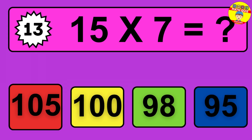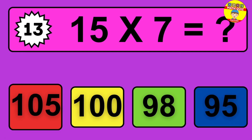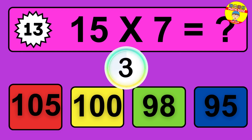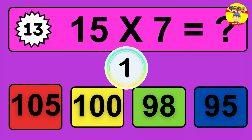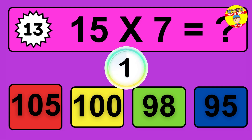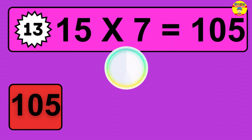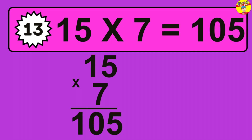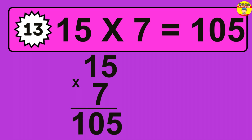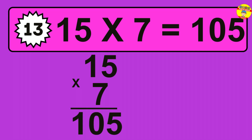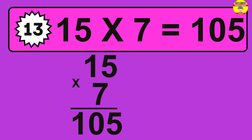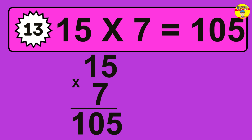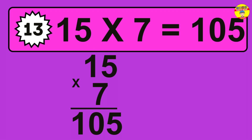Question 13. 15 times 7 equals what? The answer is 15 times 7 is 105. To calculate, we have 15 groups with 7 balls each one. So, how many balls do we have? 105 balls.